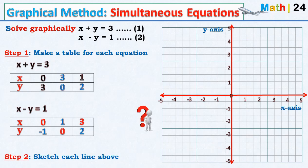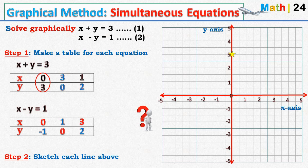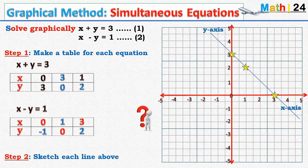This brings us to step two, which is to sketch each line. We move to a coordinate axis. Starting with the first equation: when x is zero, y is three; when x is three, y is zero; and when x is one, y is two. We link these three points with a straight line, giving us the equation x plus y equals three.